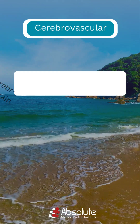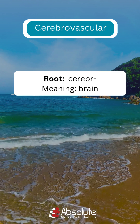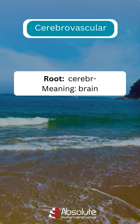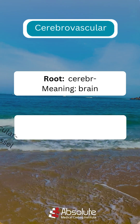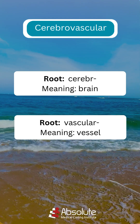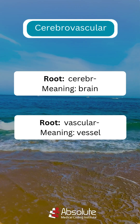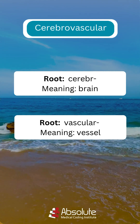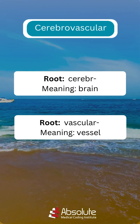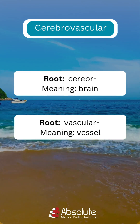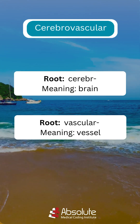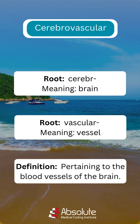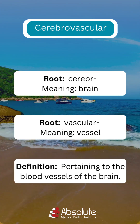The root word cerebra, from Latin cerebrum, means brain. The root word vascular, from Latin vasculum, means vessel. When you combine the root words, you get the definition: pertaining to the blood vessels of the brain.